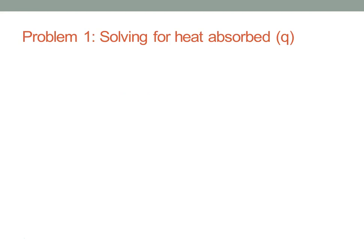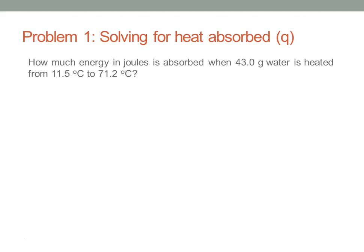Problem one: solving for Q, heat absorbed — remembering that Q is the variable that we use whenever heat is absorbed or released during a physical or chemical process. The problem is: how much energy in joules is absorbed when 43.0 grams of water is heated from 11.5 degrees C to 71.2 degrees C?